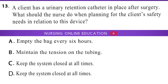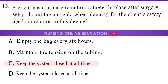Question 13. A client has a urinary retention catheter in place after surgery. What should the nurse do when planning for the client's safety needs in relation to this device? A. Empty the bag every 6 hours. B. Maintain the tension on the tubing. C. Keep the system closed at all times. D. Keep the system closed at all times. The answer is option C: Keep the system closed at all times.